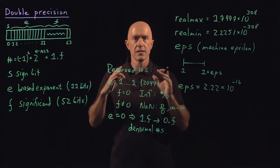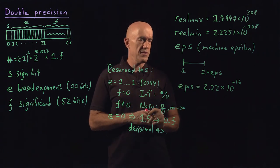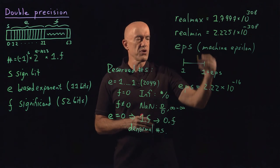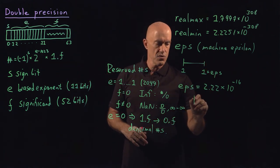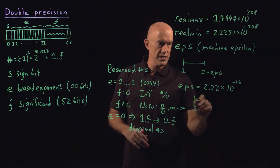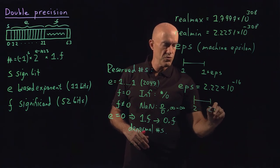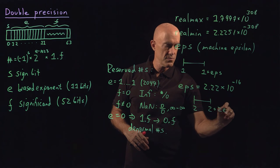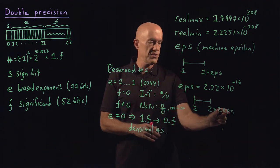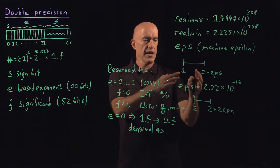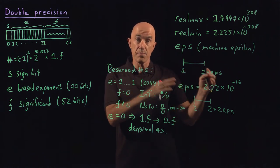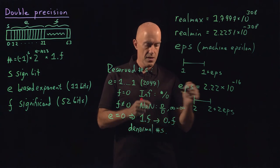Of course when you go up in value here because of this exponent here, you would say a number just larger than 2 would be 2 plus 2 times machine epsilon. So the spacing increases by a factor of 2 every time your number moves up by a factor of 2.